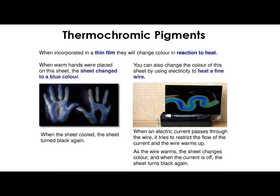The next ones are different pigments — they react to different types of inputs. This one reacts to heat: thermochromic or thermochromatic pigments. They're quite often incorporated into a film — a really thin piece of plastic that will change colour in reaction to heat. You can see this sheet here that once you put your hands on it, it changes colour, reacting to the heat in your hands. Sometimes it can be generated by an electric current, because the resistance on the wire generates heat which warms up the film, and you get the bright colours again.